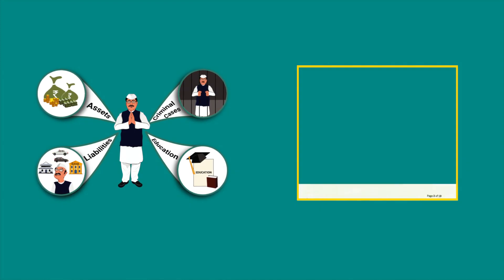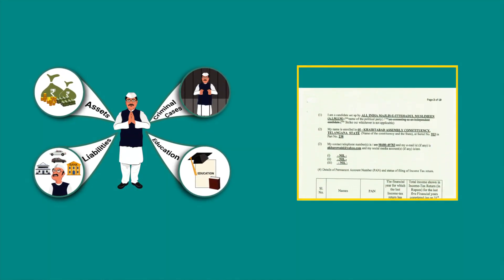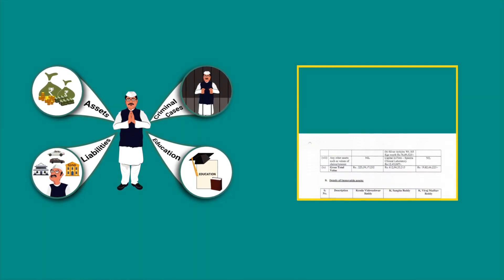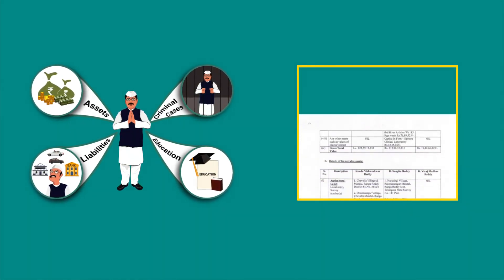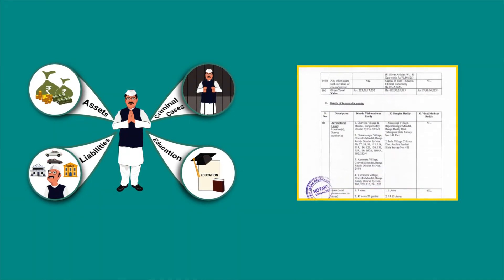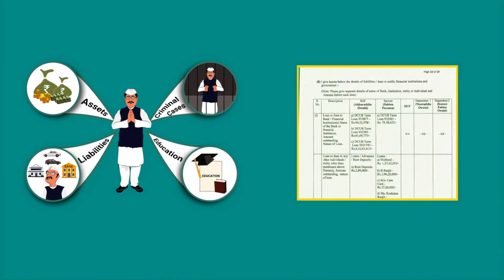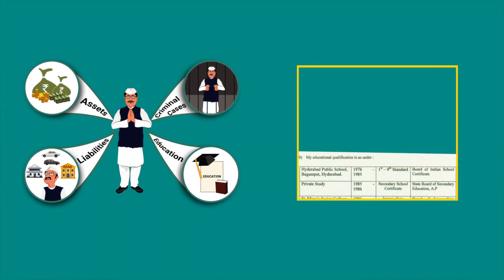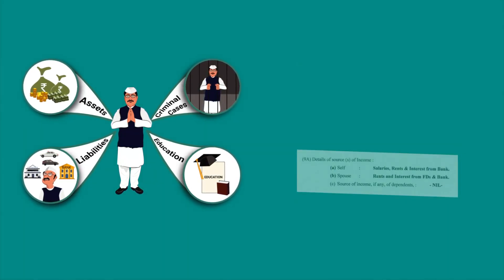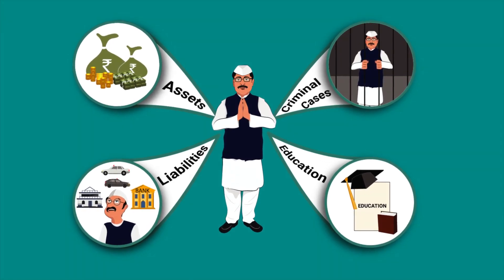The affidavit also contains income tax return details for the preceding five years of the candidate, spouse, and dependents; details of movable or immovable assets in the name of the candidate, spouse, and dependents; details of liabilities and dues to any public institution including banks; educational qualifications; and sources of income. All this information is submitted by the candidates themselves.